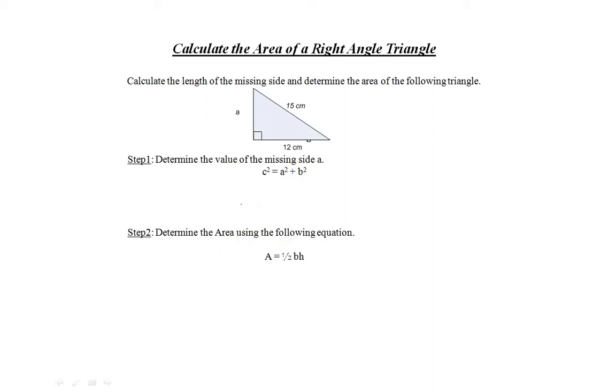Substitute in the values for C and B. 15 squared equals A squared plus 12 squared.